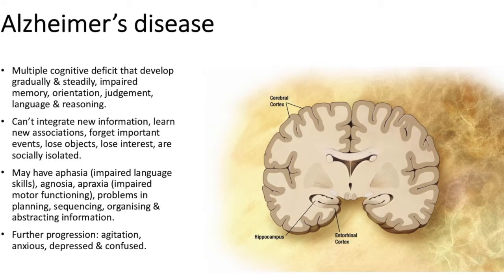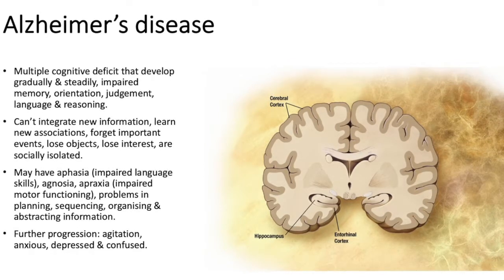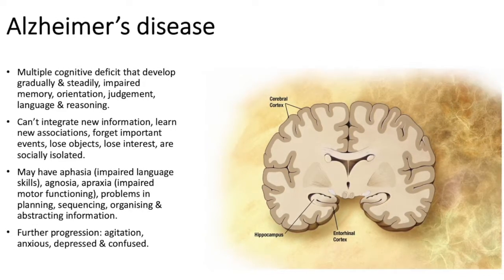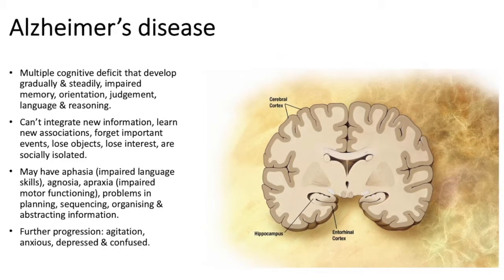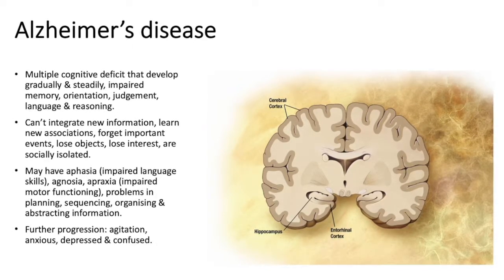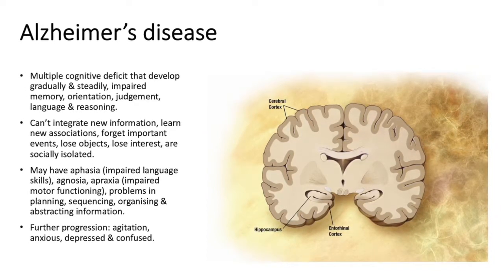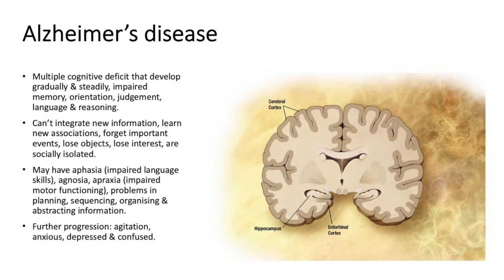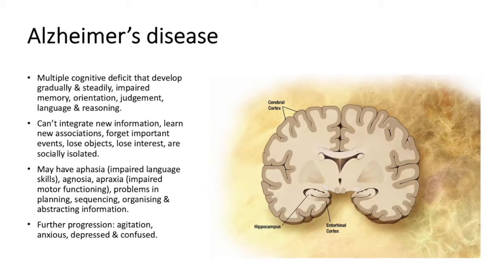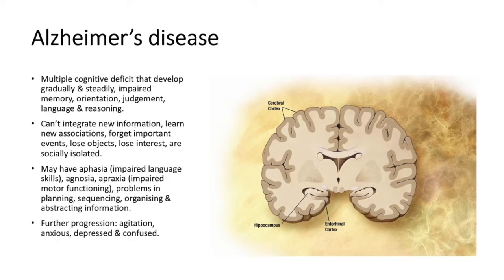Alzheimer's disease is when there are multiple cognitive deficits that develop gradually and steadily. The cognitive deficits include impaired memory, orientation, judgment, language, and reasoning. Individuals cannot integrate new information or learn new associations, they forget important events, lose objects, lose interests, and become socially isolated. They may also have aphasia, which is impaired language skills, agnosia, and apraxia, which is impaired motor functioning.